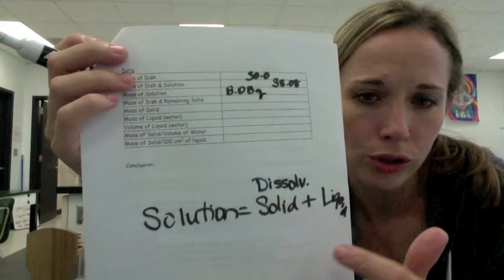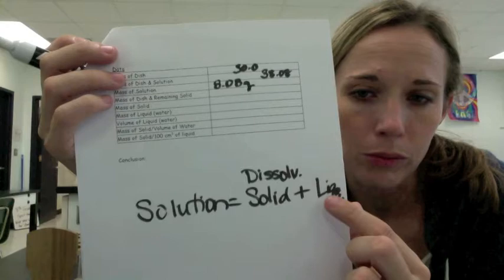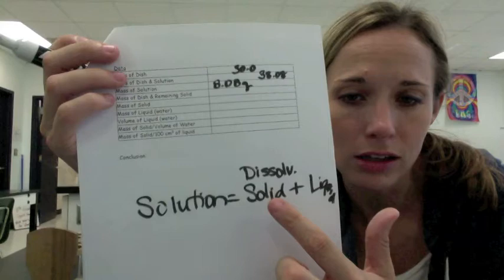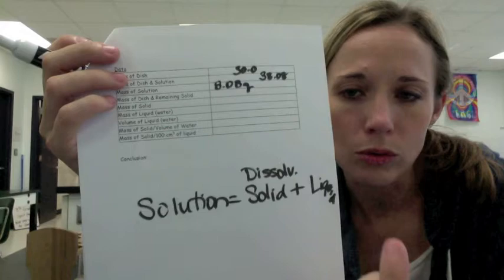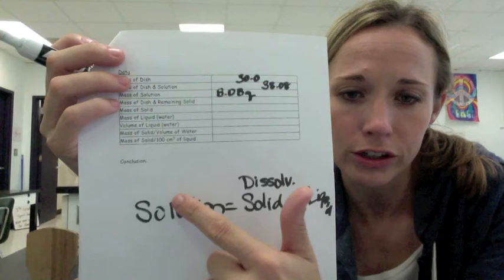Here's what I want you to recognize: solution equals dissolved solid plus liquid — two parts. That 8.08 grams is made up of dissolved solid plus liquid. So we're going to evaporate all the liquid. The part of the solution that's water we're going to boil and get rid of, so what's left is just the solid that had been dissolved. Then we'll mass it again — we'll have the mass of the dish plus the remaining solid, subtract to figure out how much is just solid.